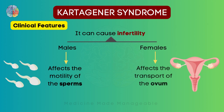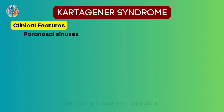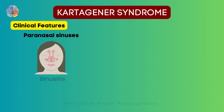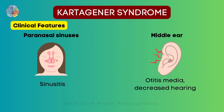In females, it can affect the transport of the ovum. The fallopian tube is also lined by cilia, which are responsible for transporting the ovum from the distant part of the fallopian tube towards the uterine cavity so that it can meet with the sperm and fertilize. But here, since the cilia are not working, the ovum will not be able to move and will never meet the sperm, hence causing infertility. It can also affect the paranasal sinuses causing sinusitis, and can occasionally lead to problems in the middle ear, causing otitis media, decreased hearing, and other conditions.